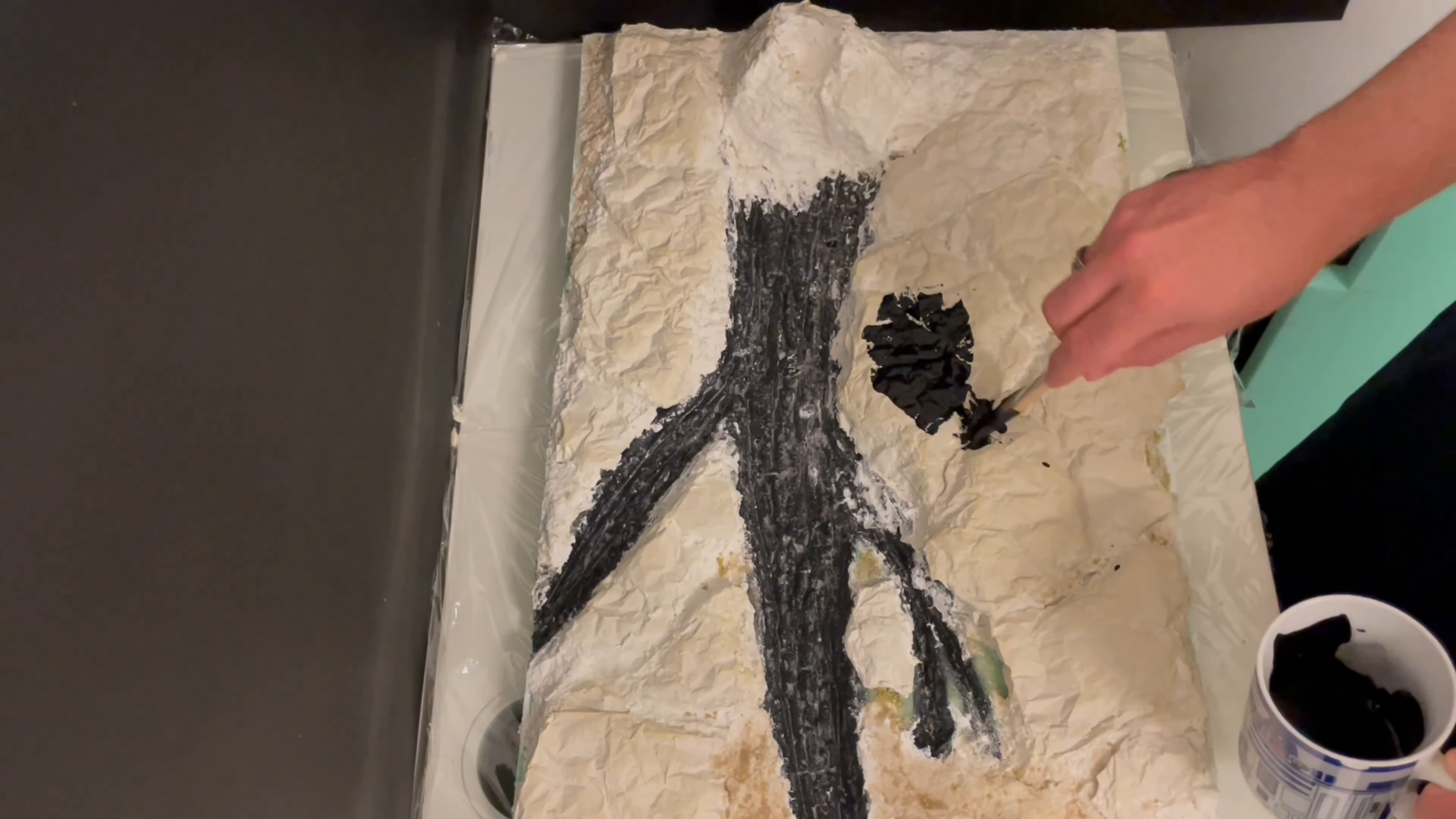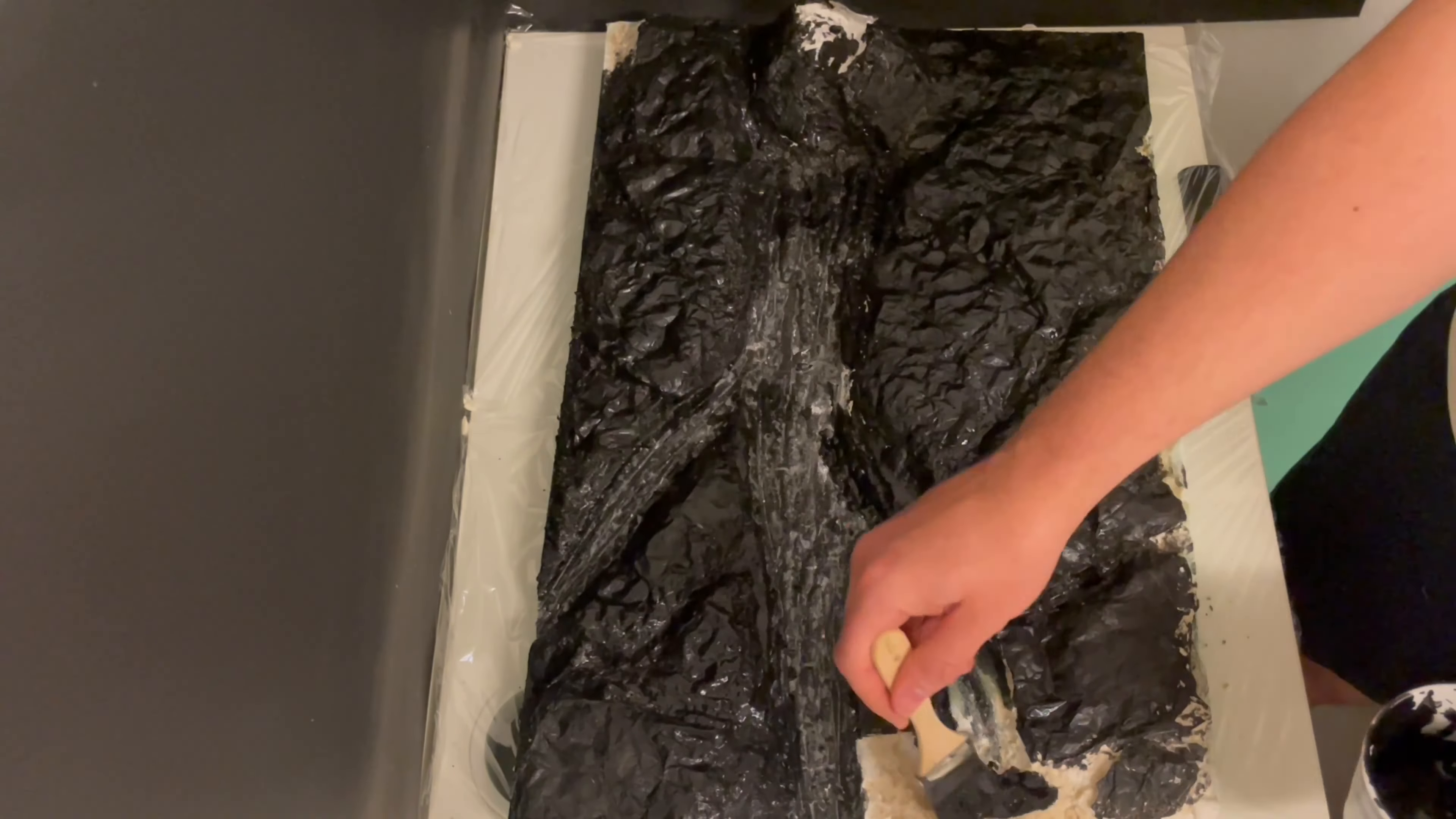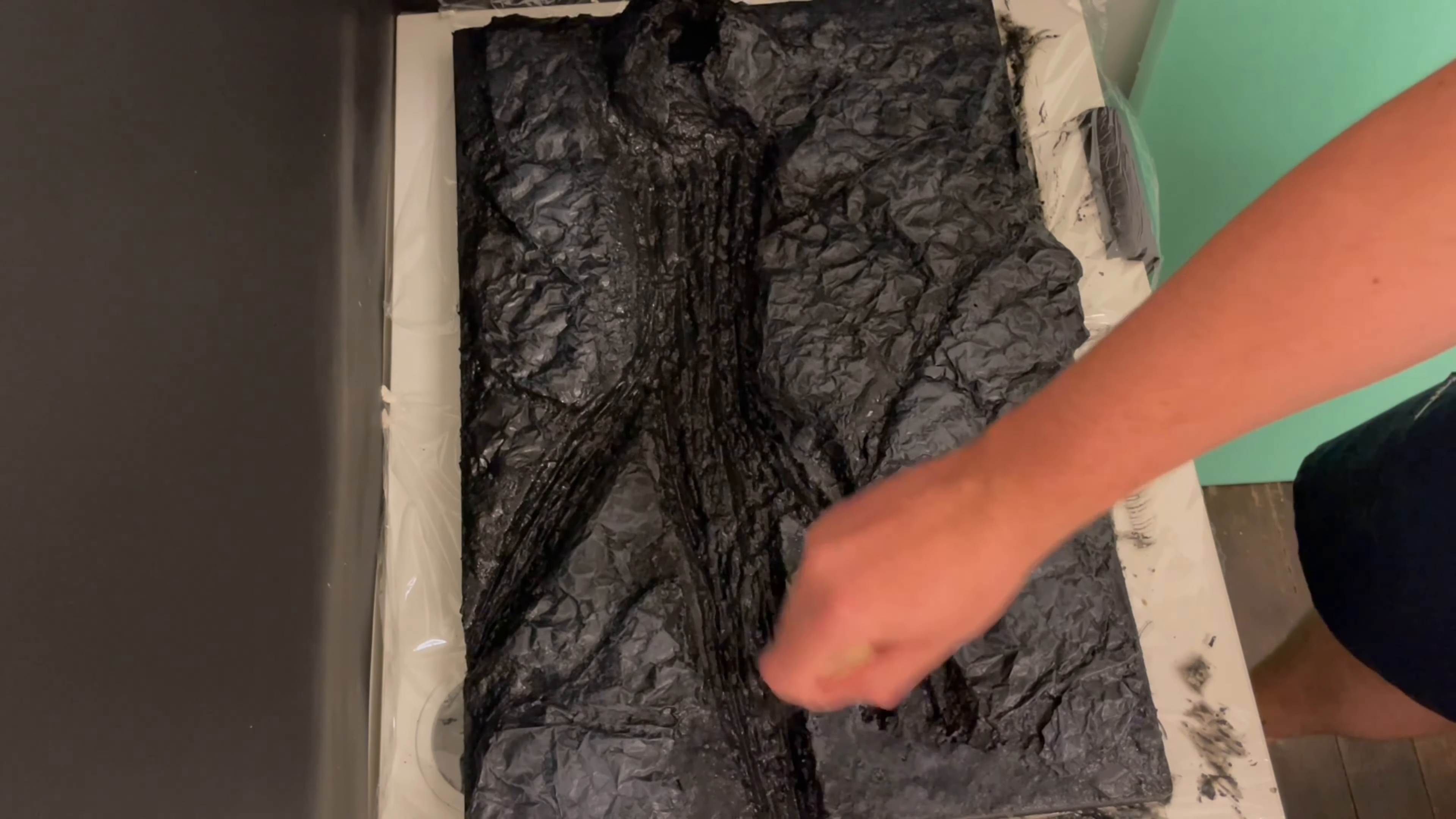Once that dries, it's time to go over the whole terrain with a coat of watered-down black paint. Now I'm just going over the whole thing and it's starting to take on a really nice rocky terrain look.